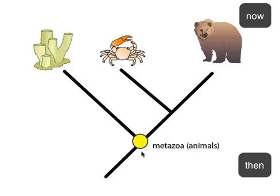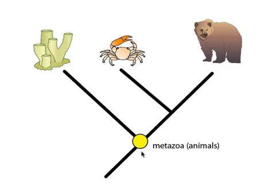Therefore, this yellow dot represents the last common ancestor of all animals, an organism which itself is now long gone, but whose ancestors, the sponge, crab, and bear, still remain.